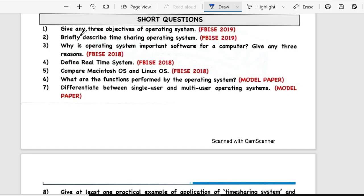Short questions come to Chapter 2. Give any three objectives of operating system. Number two, describe time sharing operating system. Three is why is operating system important software for computer? Give any three reasons. Fourth is define real-time system.